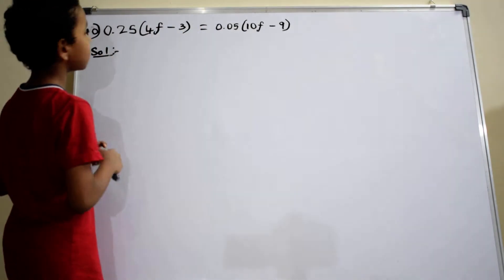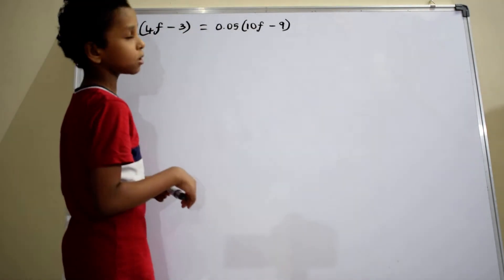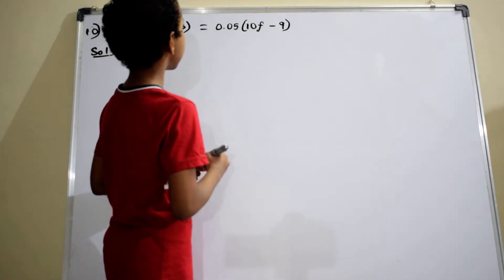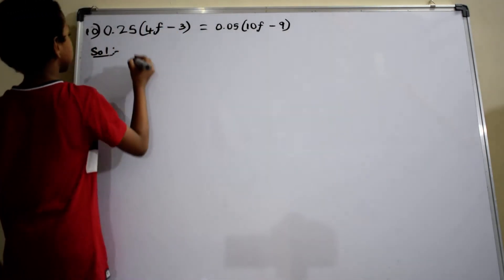The problem is solve 0.25 into 4f minus 3 equals to 0.05 into 10f minus 3.